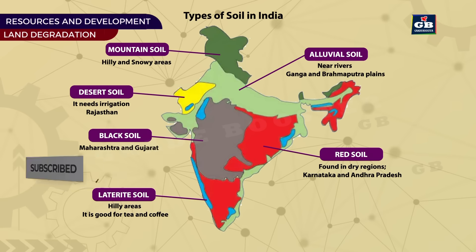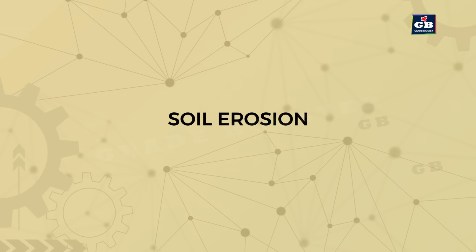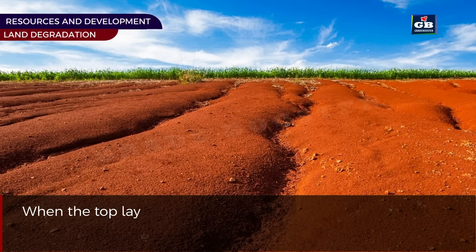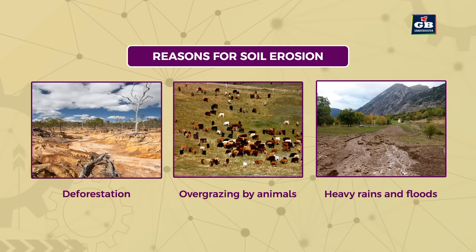Mountain soil is found in hilly and snowy areas. Soil erosion occurs when the top layer of soil is removed by wind or water. Soil erosion is caused by deforestation, overgrazing by animals, heavy rains, and floods.